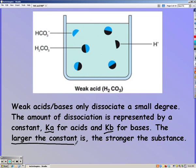The amount of dissociation is represented by the constant Ka for acids and Kb for bases. Make sure you know the larger the constant, the stronger the substance. The larger the Ka or Kb, the stronger the acid or base.